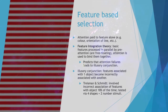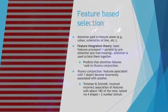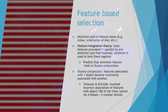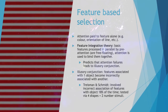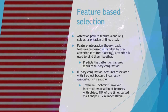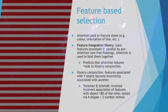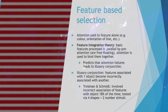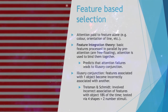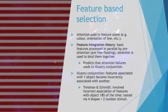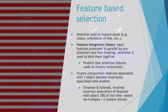Feature Integration Theory defines basic features as processed in parallel by pre-attention — they are free-floating, and attention is used to bind these together to form an object. It predicts that attention failures lead to illusory conjunction, which is when features associated with one object become incorrectly associated with another. Treisman and Schmidt found that illusory conjunction involved incorrect association of features with objects 18% of the time, tested via four shapes and two numbered stimuli.